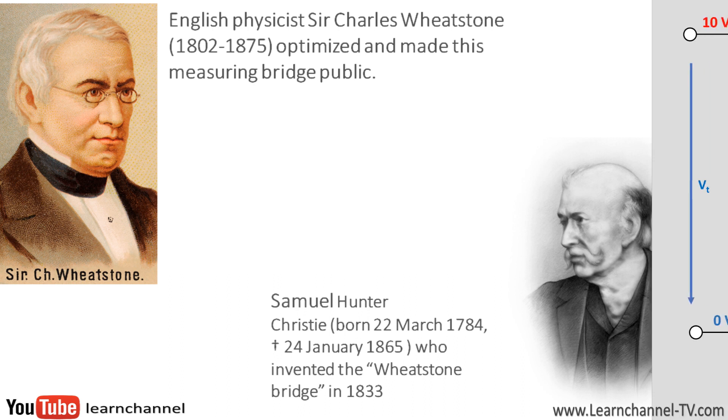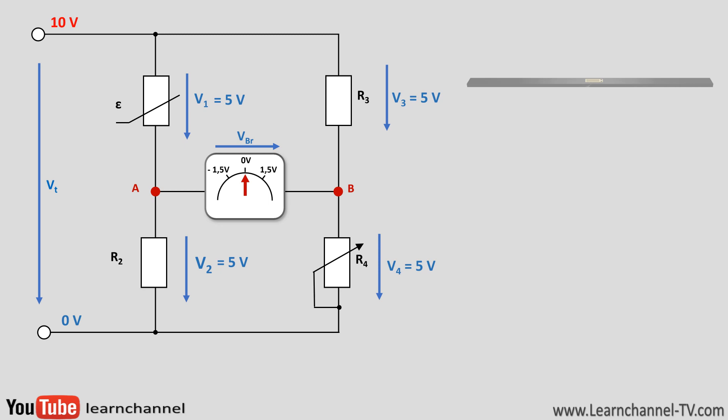In our example, a strain gauge is installed. As soon as the resistor value changes due to an external force, the bridge voltage will also change accordingly. This change in the bridge voltage can be measured and evaluated, and thus the actual mass which caused the force can be inferred.